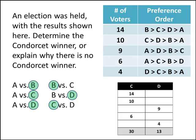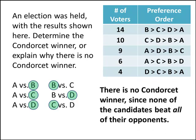Now we need a conclusion. We look for a candidate that beat all of its opponents. It's certainly not A — in fact, A is a Condorcet loser because it lost all of its one-on-one matchups. B defeated A and C but lost to D, so B is not the Condorcet winner. C was defeated by B, and D was defeated by C. None of the candidates beat all of their opponents, so there is no Condorcet winner. This situation is sometimes called a Condorcet paradox, and it is the main drawback of this method — it sometimes does not give you a clear winner.